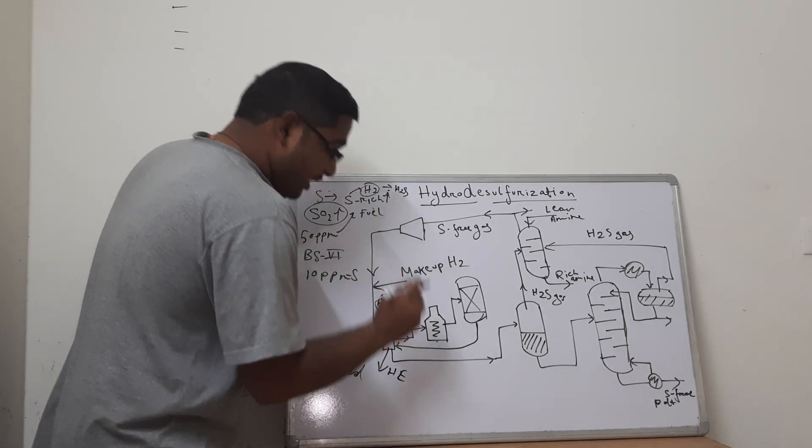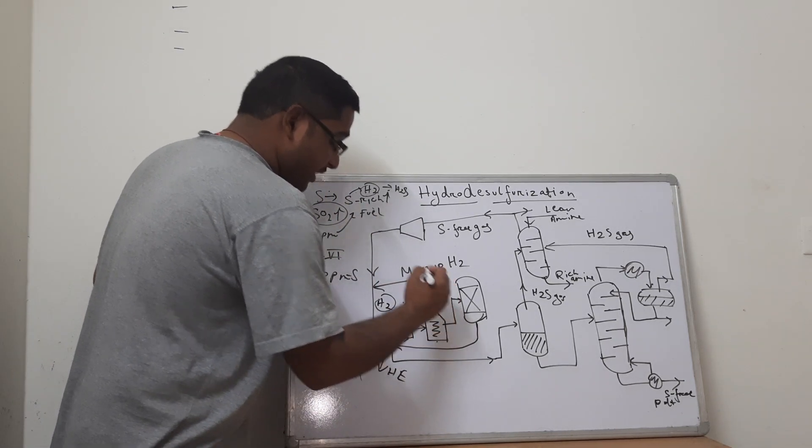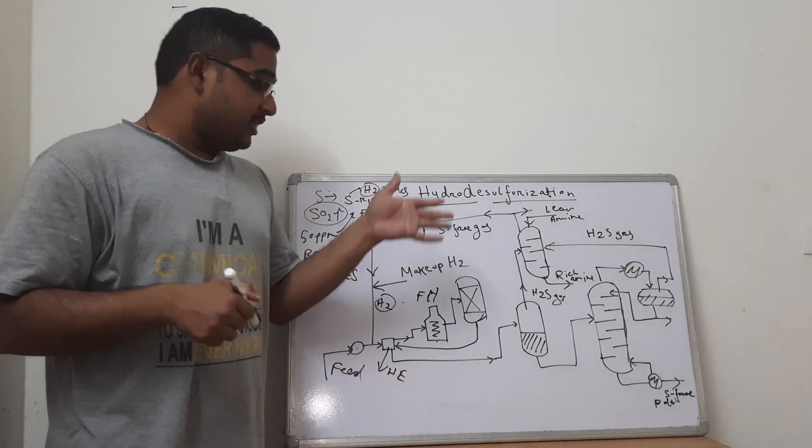It is being preheated through multiple steps, first by a heat exchanger, HE, and then by a fired heater, fire heater FH. So firstly, heat exchanger and then fire heater.